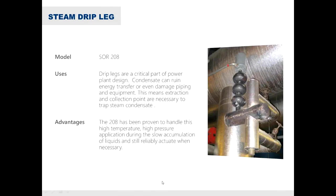Steam drip legs are all over power plants. To increase efficiency and protect equipment, they need to make sure condensate does not get into the turbines. They'll have steam condensate drip legs that catch condensate and dump it out depending on where the level is, controlling that level. These are very high-temperature, high-pressure applications, and we have custom capabilities to achieve those extreme high temperatures.